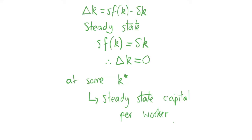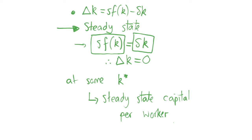In the previous video we derived the law of motion of capital. To derive the steady state of the Solow growth model, we are basically saying that we have investment just enough to cover depreciation. The investment term and the depreciation of capital term: if we set them equal, investment is exactly equal to depreciation and the change in the capital stock is zero. We don't gain or lose any capital — we're investing just enough to replenish what's lost to depreciation. We will be in steady state at some level of capital per capita, k*, which we call the steady state capital per worker.